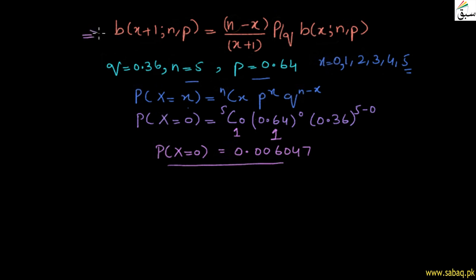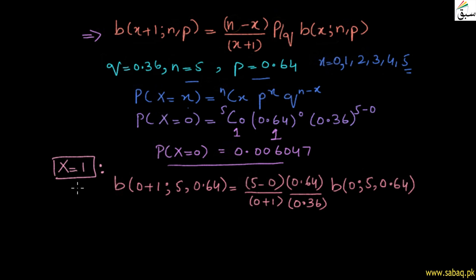Now we apply the recurrence formula for P(X = 1). In the formula, x takes the value 0, so x plus 1 equals 1. We plug in n equal to 5, p equal to 0.64, q equal to 0.36, x equal to 0, and P(X = 0) equal to 0.006047.